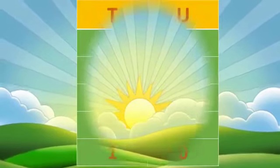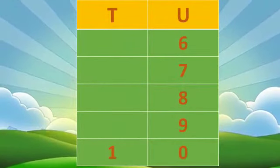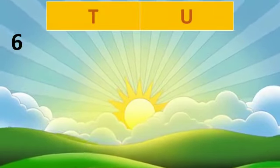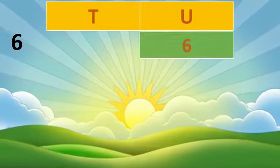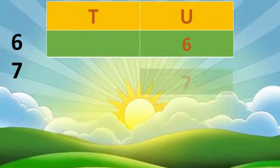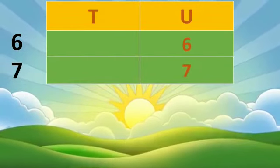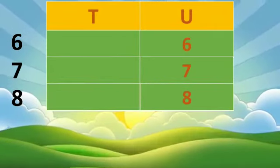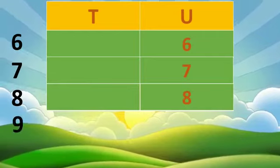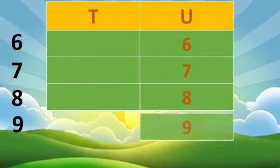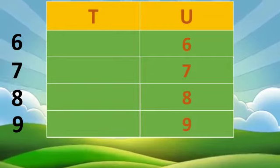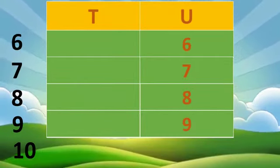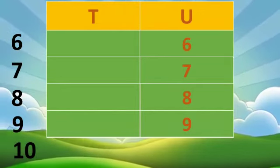Now let's quickly write numbers from six to ten. Number six — we place six in the units column. Seven — we place seven in the units column. Eight — we place eight in the units column. Number nine — we place nine in the units column. Why do we put all these numbers in the units column? Because they are all one-digit numbers.